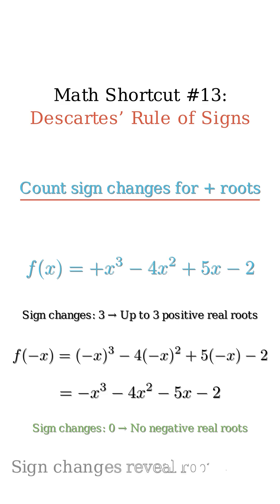So, Descartes' rule tells us this polynomial has at most three positive real roots and zero negative ones. Easy check, big insight. See you next time.